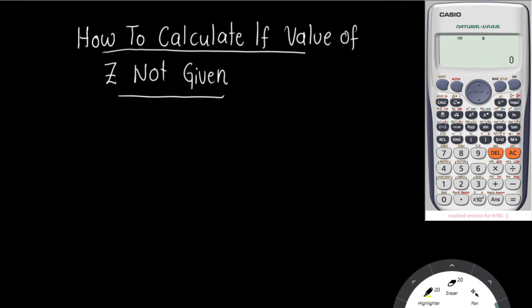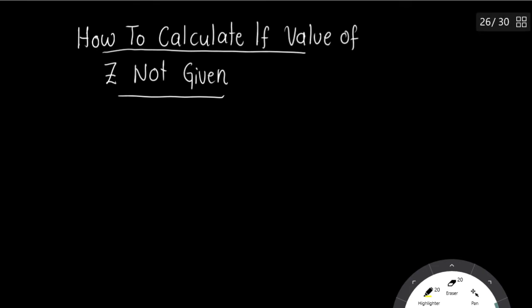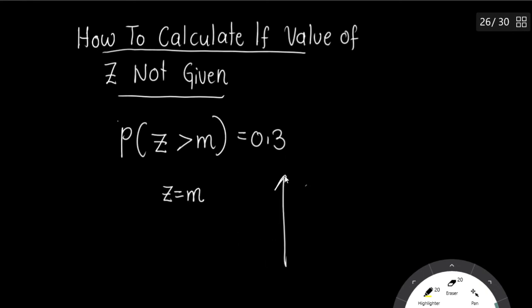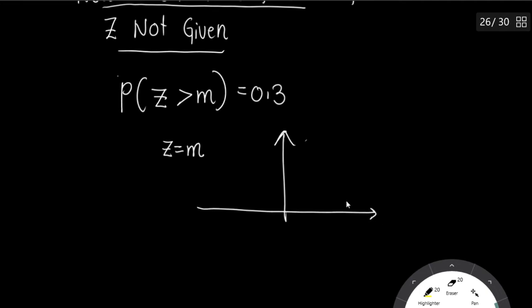How they usually give this question: find the probability of Z greater than m equals 0.3. Here your Z score is the m — that's what we need to find. The area given is 0.3. Now how do you find from the table? This is why you need to keep your table ready.